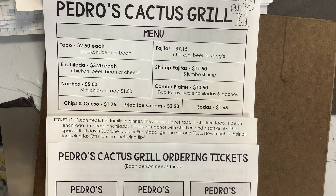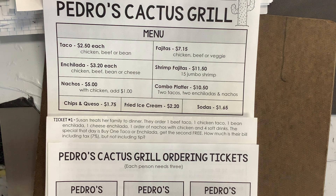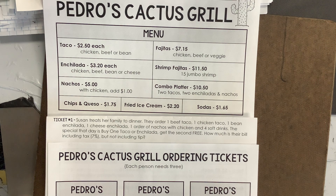Some of the tickets that you'll work on are already filled out — they already have the numbers all in and they'll tell you what they want you to do. You're going to have to find the total for the food, then calculate tax, and some of them have you calculate tip as well.